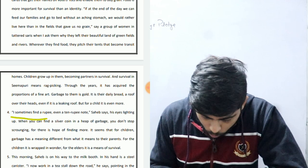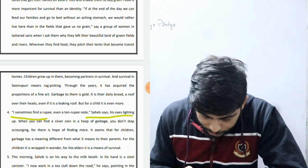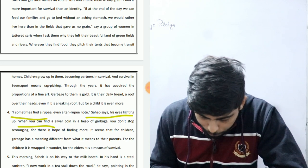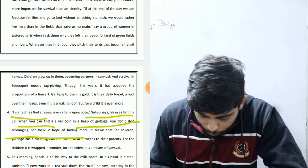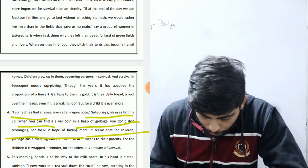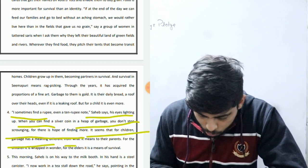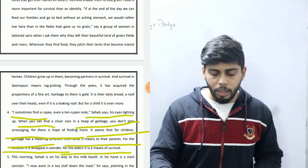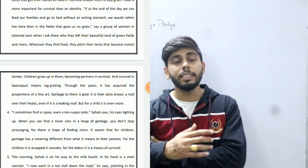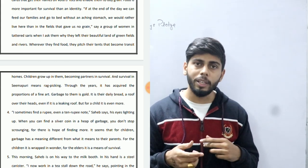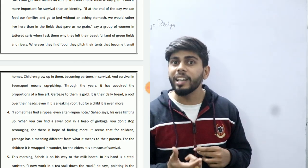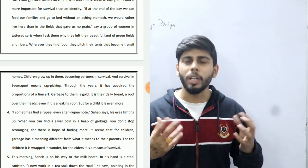Sahib says, his eyes lighting up: 'When you can't find a silver coin in a heap of garbage, you don't stop scrounging, for there is a hope of finding more.' Garbage means something different for children versus their parents. For the children, it is wrapped in wonder. For the elders, it means survival — it is their source of income and daily bread.